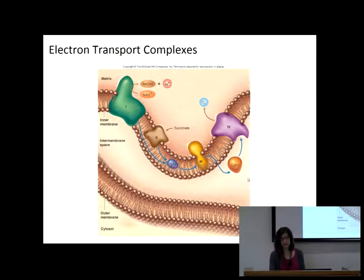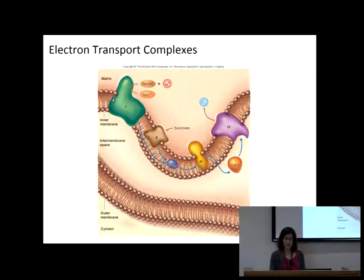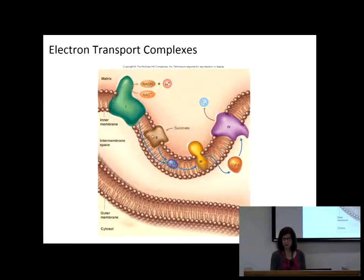This is what the complexes really look like — it would be kind of funny if they were colored like this, but they're globs along our inner membrane. You can see the phospholipids — the little balls with the little lines are the phospholipids that make up our membranes. We'll study those later this semester. Here's complex 1, complex 2, complex 3, and complex 4. Notice that complexes 1, 3, and 4 span the membrane, but complex 2 does not.